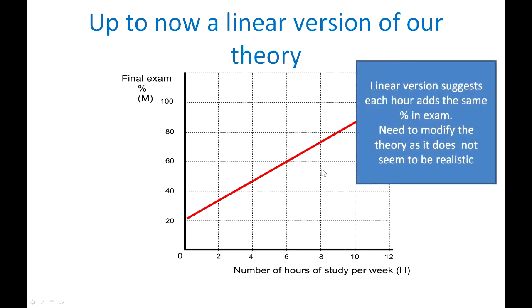The problem with this theory however is in its linear version because the constant slope suggests that each hour adds the same percentage to the exam irrespective of how many hours you study. So in other words, early on when you've done very few hours will yield you exactly the same through extra study as if you've done say ten hours of study. That doesn't seem very realistic, so let us modify that theory of a linear relationship.